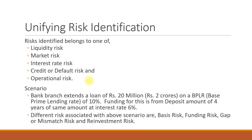Aggregate risks such as credit, market, and operational risks determine capital needs, and guidance for risk taking should come from a corporate level. To illustrate risk identification, consider this scenario: a bank branch extends a loan of Rs. 20 million at a BPLR-based prime lending rate of 10%, funded by a deposit of the same amount for four years at an interest rate of 6%. The risks associated are basis risk, funding risk, gap or mismatch risk, and reinvestment risk.